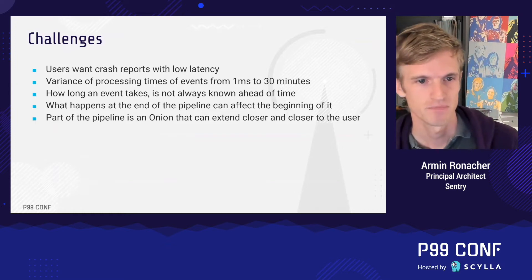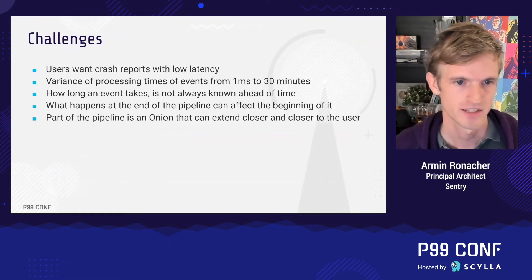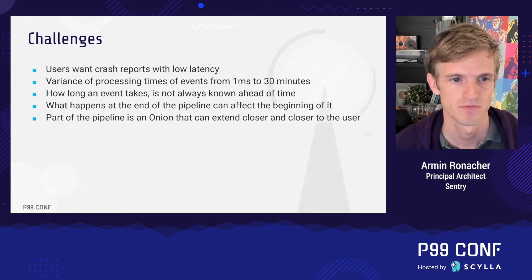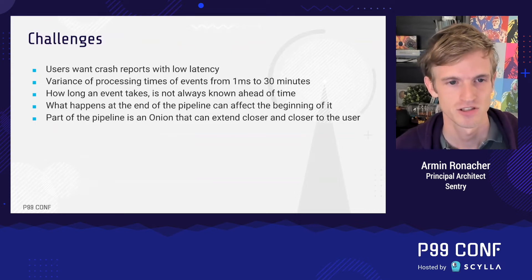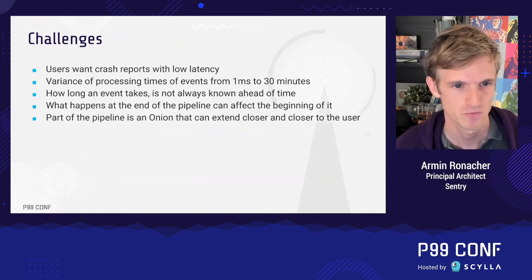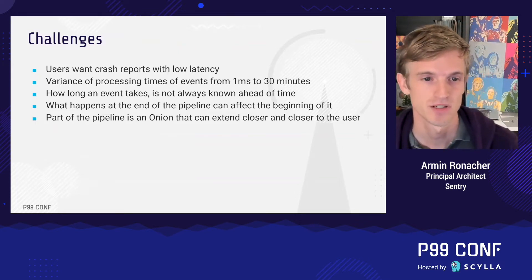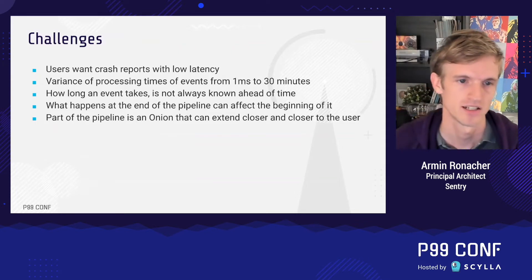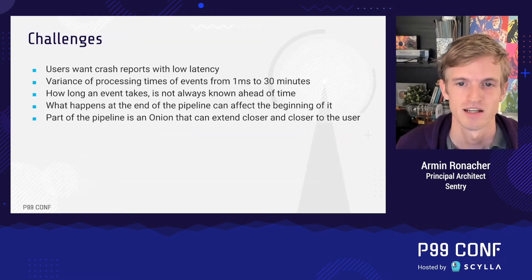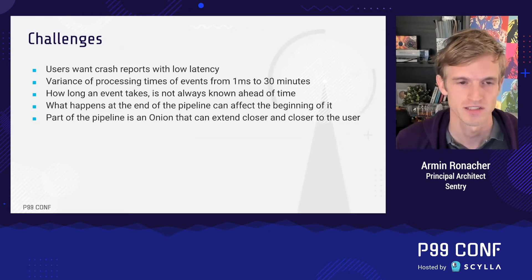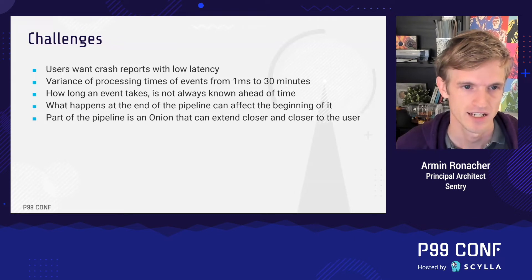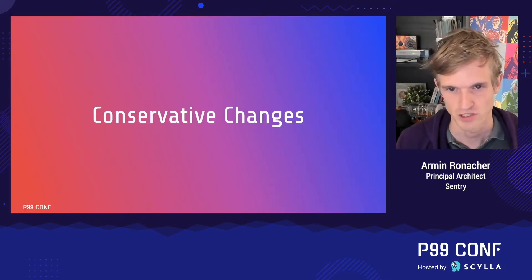We built our pipeline so it can be extended closer and closer to the customer. We operate two layers: the innermost ingestion system and points of presence around the world. The customer can also run a relay — a proxy on their own premise — to perform PII stripping before data leaves their infrastructure.